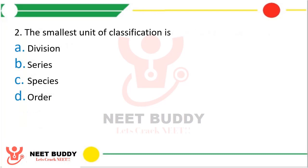Question 12. The smallest unit of classification is: Option A, Division; Option B, Series; Option C, Species; or Option D, Order. The correct answer is Option C, Species.